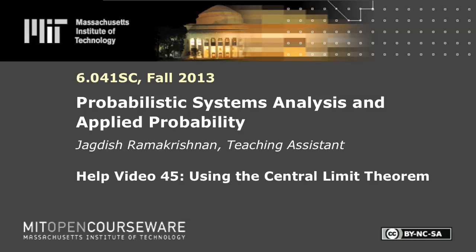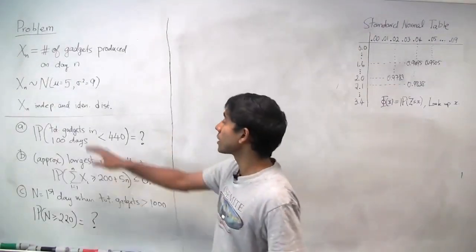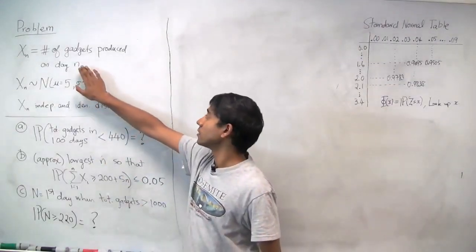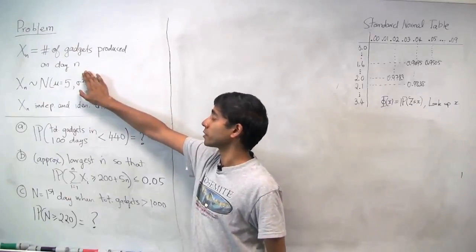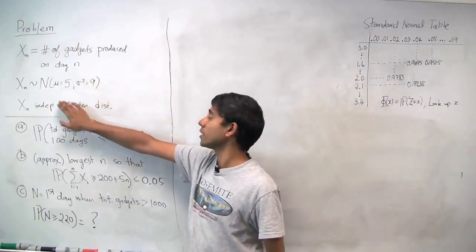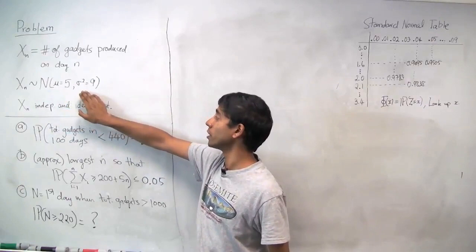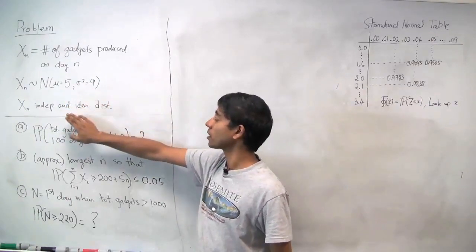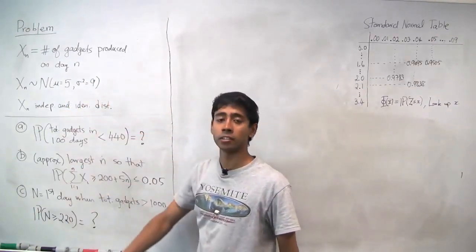In this video, we're going to do some approximate calculations using the central limit theorem. We're given that Xn is the number of gadgets produced on day n by a factory, and it has a normal distribution with mean 5 and variance 9. They're all independent and identically distributed.